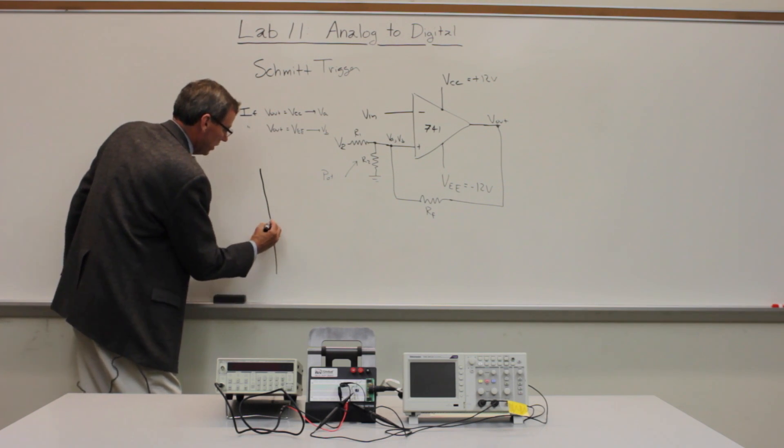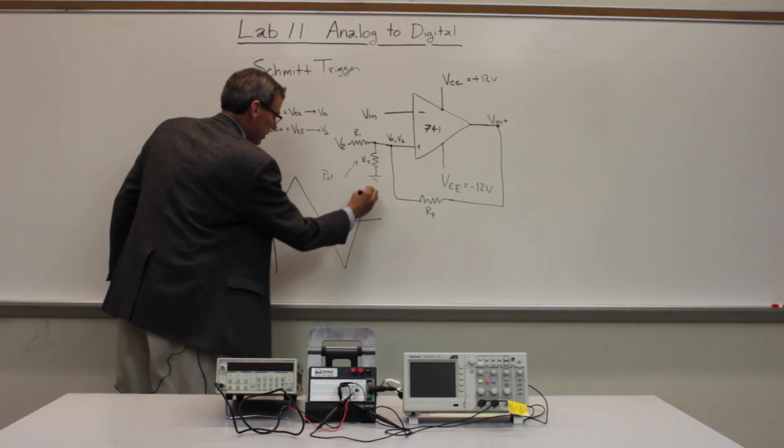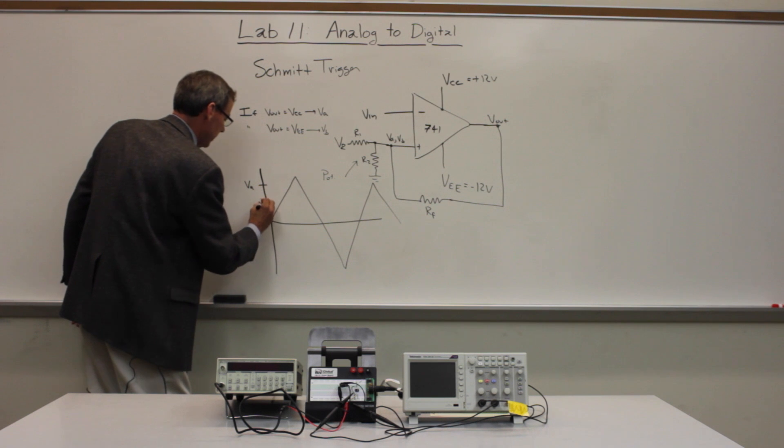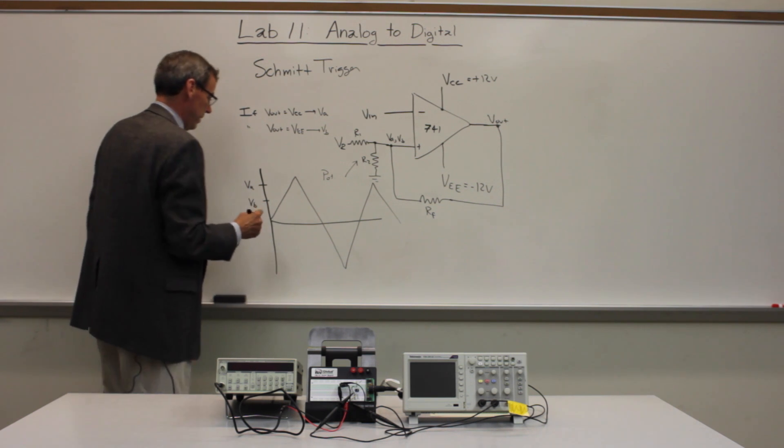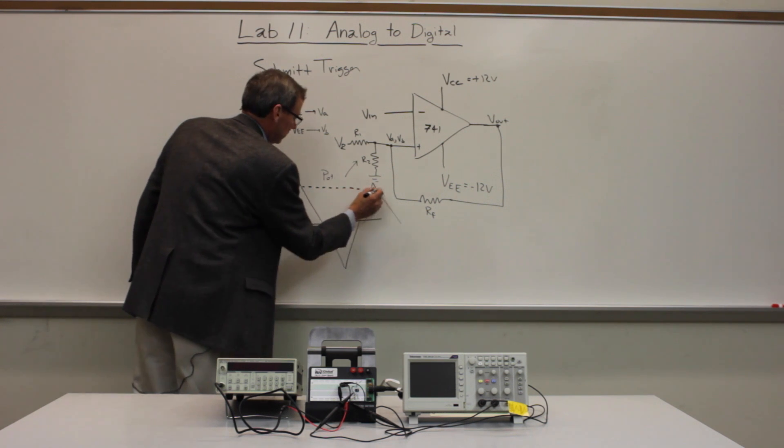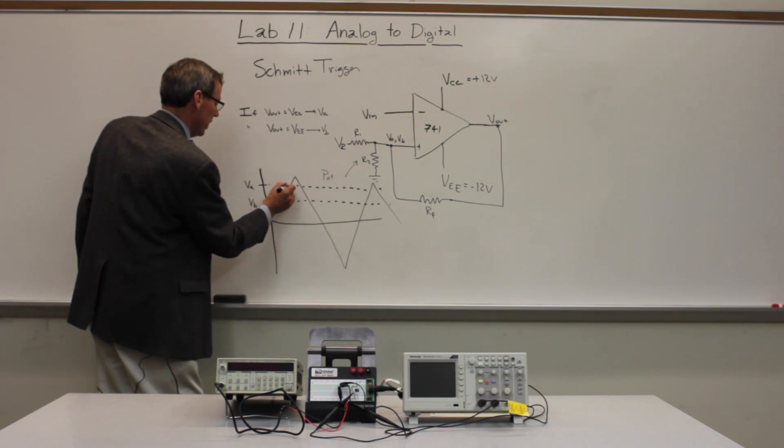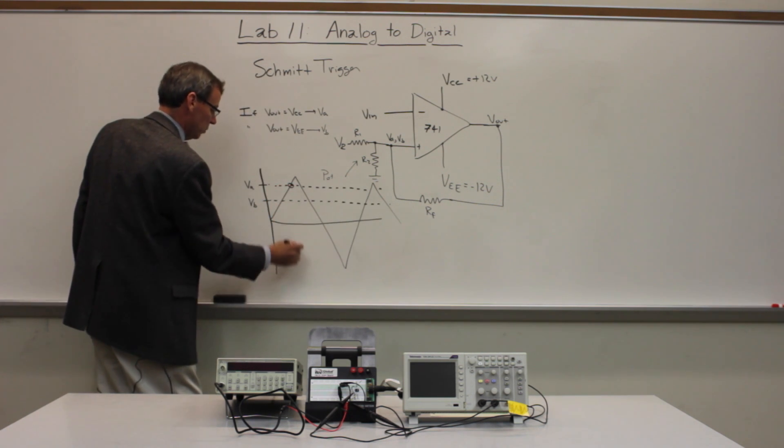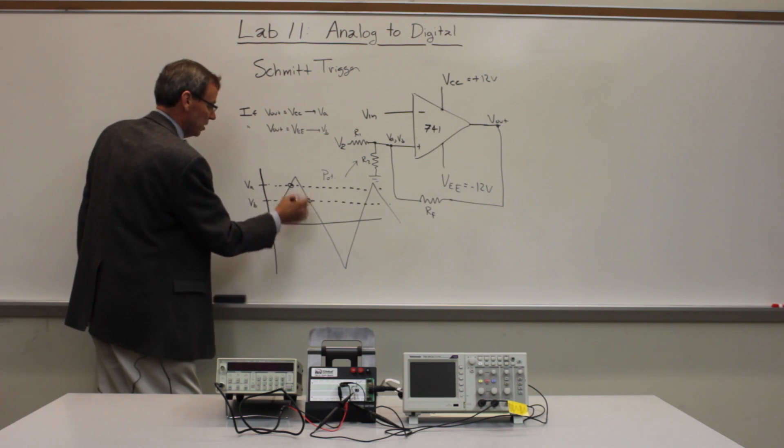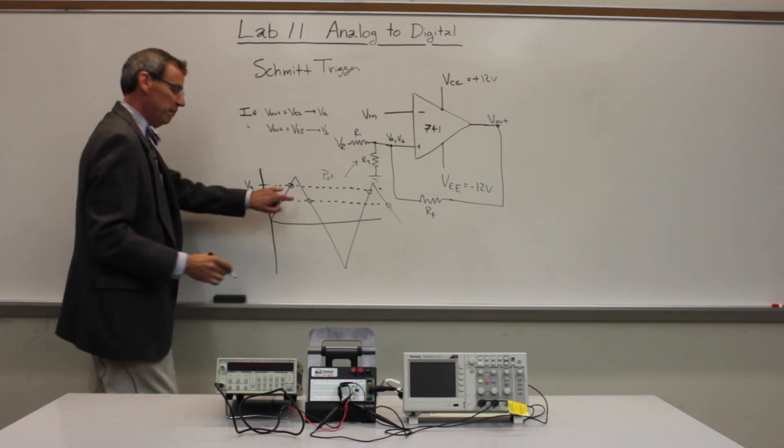So we have a slight modification here. We're going to talk about our triangle wave input again. So we'll put our triangle wave into this. And now there are two threshold levels, VA and VB. And these thresholds determine when things are happening. So when we go up, we have to cross VA for it to switch to the VEE state. And when we're going down, we have to cross VB for it to switch back up.